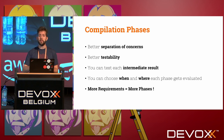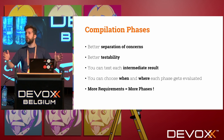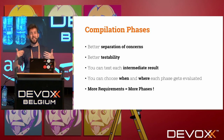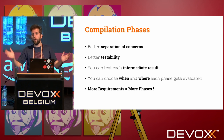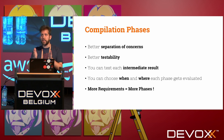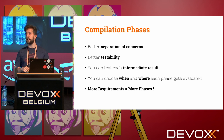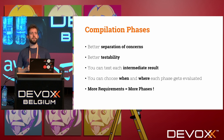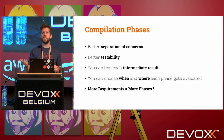Using compilation phases promotes better separation of concerns and better testability — instead of one huge evaluation phase, you have several smaller intermediate steps you can test individually. You can choose when and where each phase gets evaluated. And if you have more requirements, instead of changing old phases, you might just add a new one.